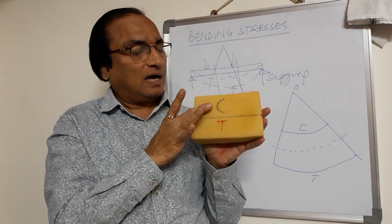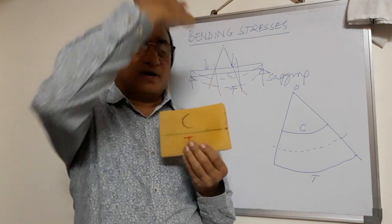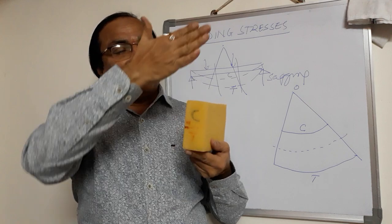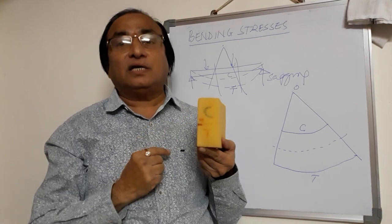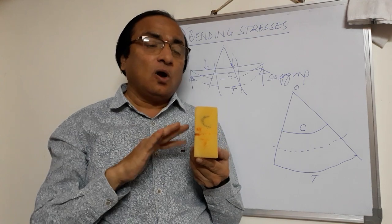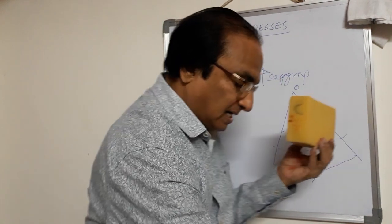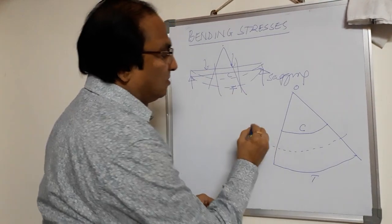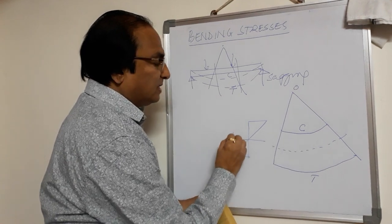We call this layer as the neutral layer. The fibers above the neutral layer are in compression. The fibers below the neutral layer are in tension. Suppose if I cut this cross section — whenever I cut the cross section, the neutral layer is cut here. So this is known as the neutral axis, where there is neither tensile stress nor compressive stress.